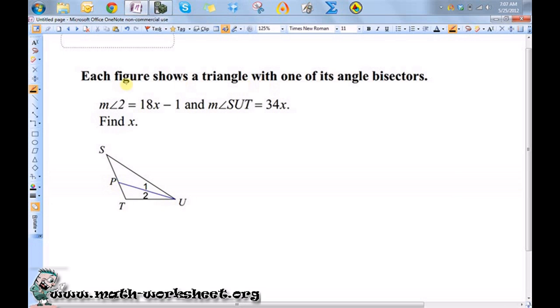Now it tells us that we have a triangle shown with one of its angle bisectors, so that means that this PU or UP needs to be an angle bisector. Therefore, half of this entire angle is equal to the measure of angle 2. So one half of the measure of angle SUT is equal to the measure of angle 2.